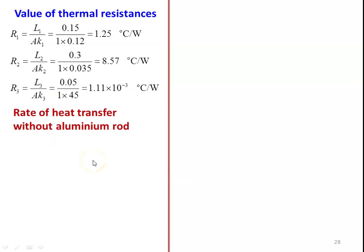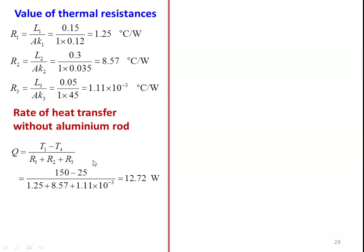Rate of heat transfer without the aluminum rod: Q = (T1 − T4)/(R1 + R2 + R3) = (150 − 25)/(1.25 + 8.57 + 1.1 × 10⁻³) = 12.72 W.